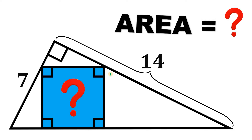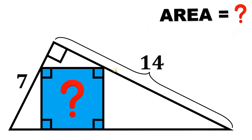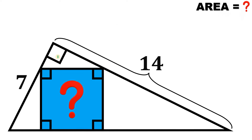If you're done, post your answer in the comment section down below, because I will show you the solution in 3, 2, 1. So given this right triangle with side lengths 7 and 14 for its legs, the question is: what is the area of the square inside of it?